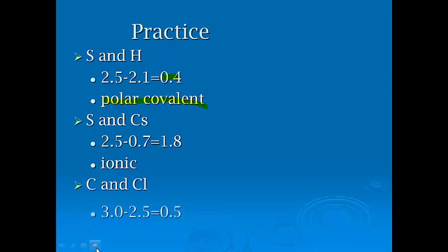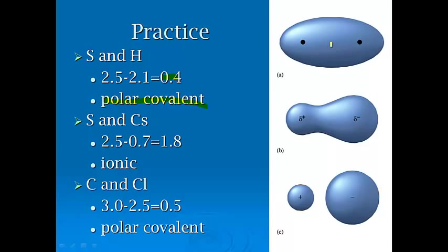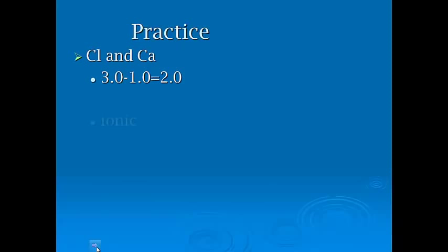And then the difference between carbon and chlorine is 0.5, which is also polar covalent. And these three up here are just another representation. Here is nonpolar covalent. Here is a polar covalent bond, because you have a negative end and a positive end. And then here's your ionic bond, because things have transferred an electron and there's a positive and negative charge.